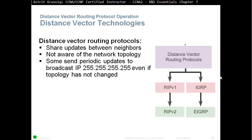Some distance vector protocols send periodic updates to the broadcast IP address 255.255.255.255, even if the topology hasn't changed. For example, RIPv1 and IGRP send broadcast updates. This is a problem because everybody is going to get it — even mobile phones, even IP phones. Anything on the network is going to receive that update.